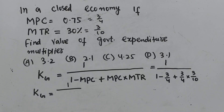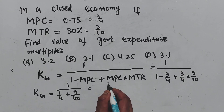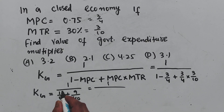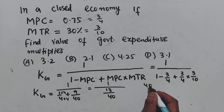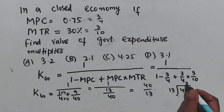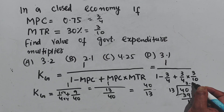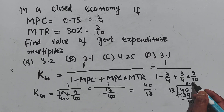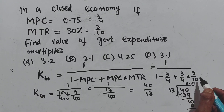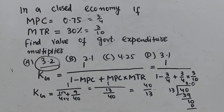Substituting: K_G = 1 / (1 - 3/4 + (3/4)(3/10)) = 1 / (1 - 3/4 + 9/40). Making the denominator common gives (40 - 30 + 9)/40 = 13/40. So K_G = 40/13 ≈ 3.08, and since 3.2 is the closest option, we take that value.